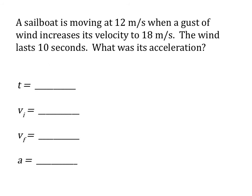All right, let's take a look at an example here. A sailboat is moving at 12 meters per second and the wind increases its velocity to a certain value. We're going to try to figure out what the acceleration is. Let's first identify what sorts of things we have in this problem.